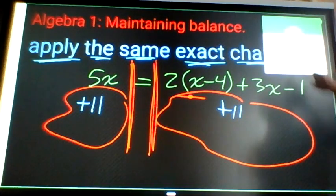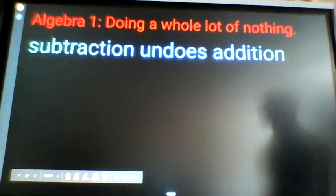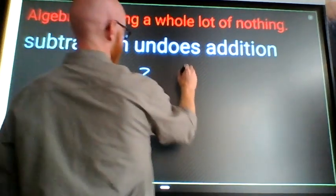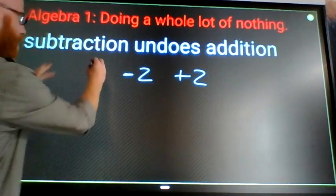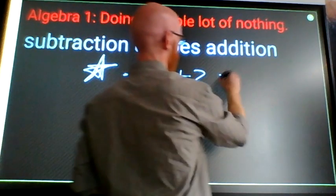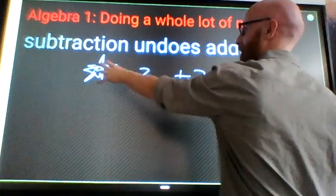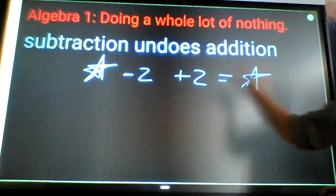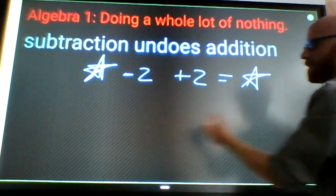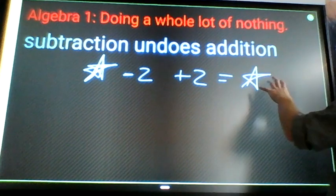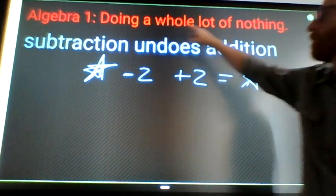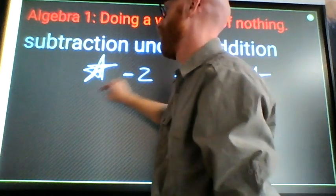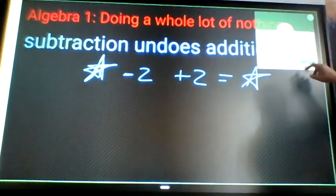A couple more key ideas: subtraction and addition are opposite operations. If I subtract 2, add 2, these two operations will cancel each other out. So no matter what I put here, any number I put here, if I apply two opposite operations to it I'll get that number back. 20 minus 2 is 18, plus 2 back to 20. 50 minus 2 is 48, plus 2 is back to 50. If we apply opposite operations back to back, we end up doing a whole lot of nothing to the first item.